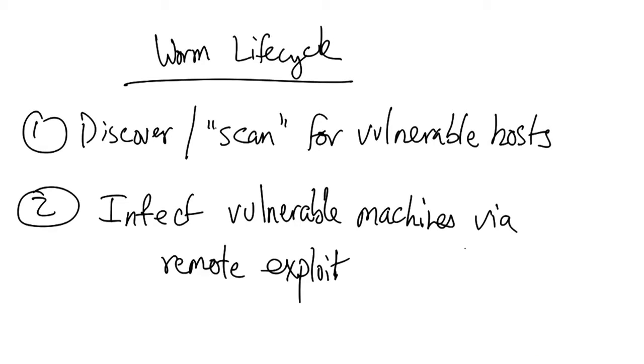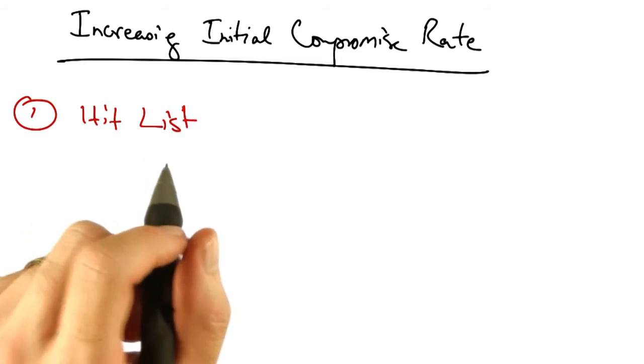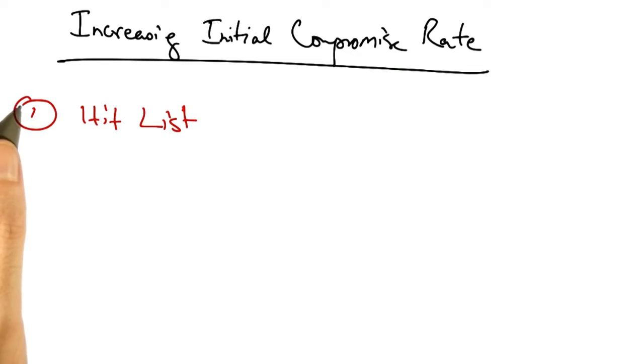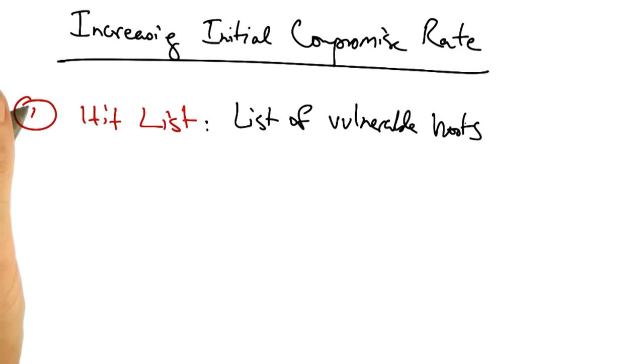Let's take a look at a couple of well-known early worms and how they spread, as well as how one might design a super fast-spreading worm. One possibility for increasing the initial compromise rate is to create a hit list, or a list of vulnerable hosts ahead of time.